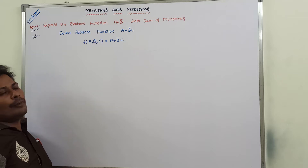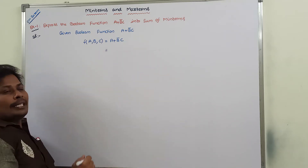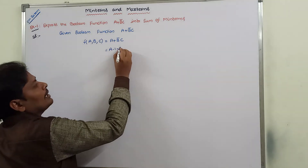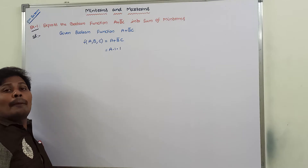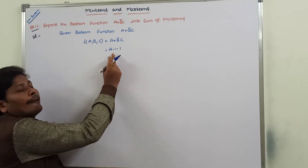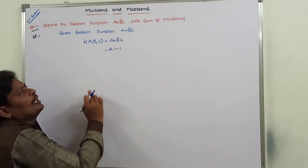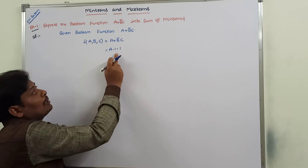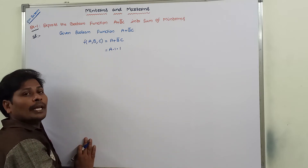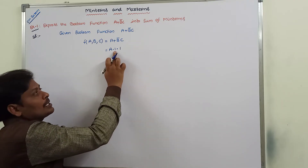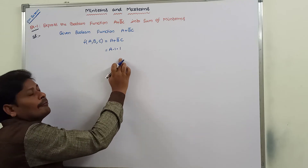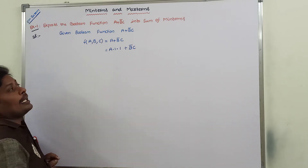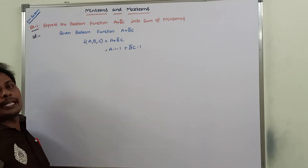Now consider the first product term A. What variables are missing? Variable B is missing and variable C is missing. For each missing variable, we have to represent it by one. In the first product term, it misses two variables B and C — one for variable B missing, one for variable C missing. In the second product term B̄C, variable A is missing, so that can be represented by one.